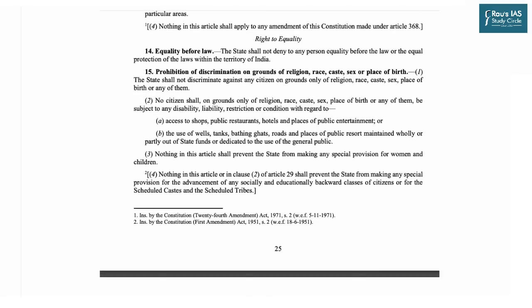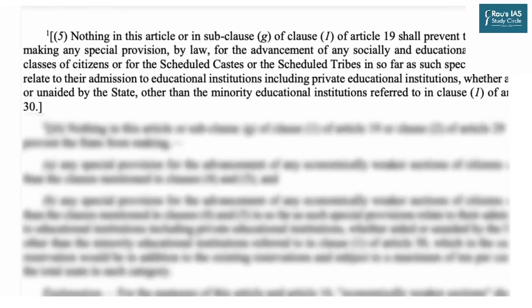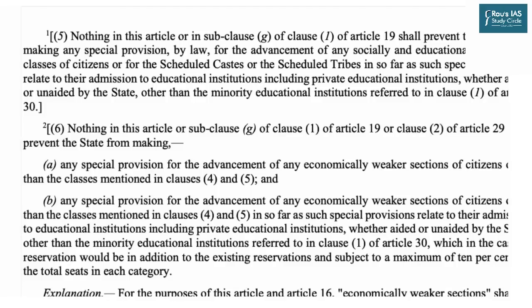Starting with fundamental rights: Article 15 talks about prohibition of discrimination on various grounds and is applicable to educational institutions partially or fully run by the state. Focusing on clause 5, inserted by the 93rd Constitutional Amendment, it talks about advancement of socially and educationally backward classes, scheduled tribes, and scheduled castes as far as their admission to educational institutions — including private educational institutions whether aided or unaided — other than minority educational institutions given in Article 30.